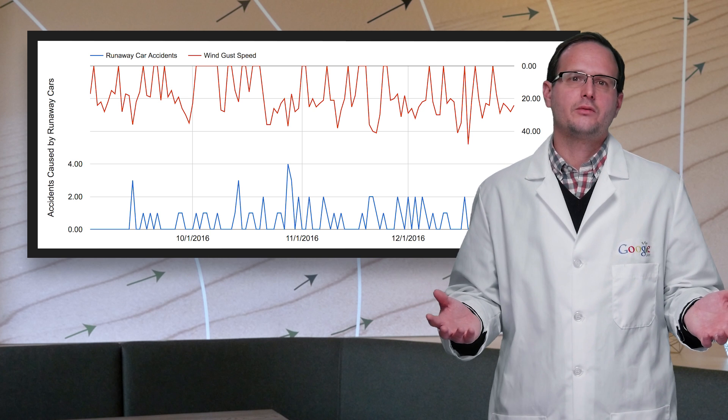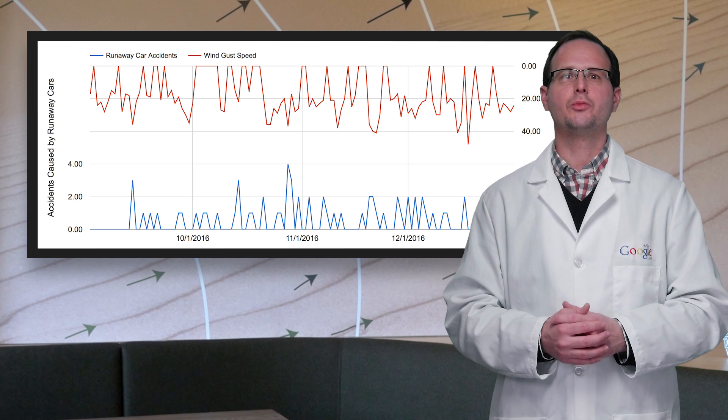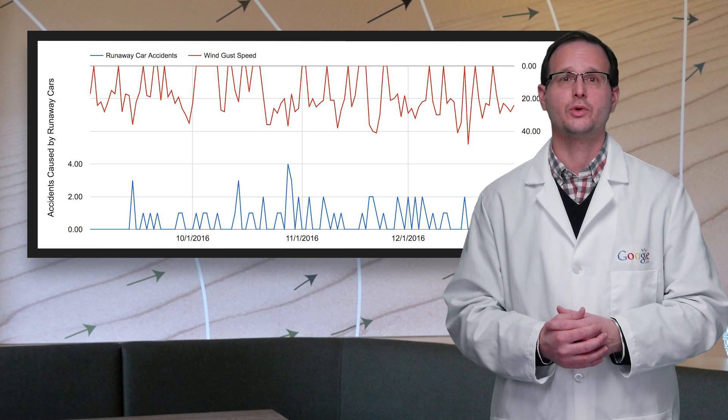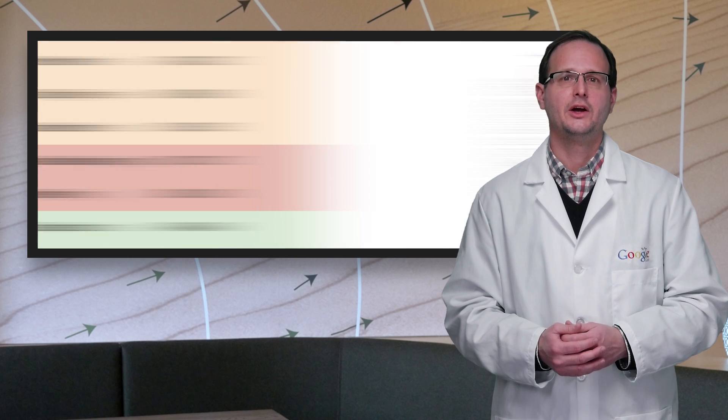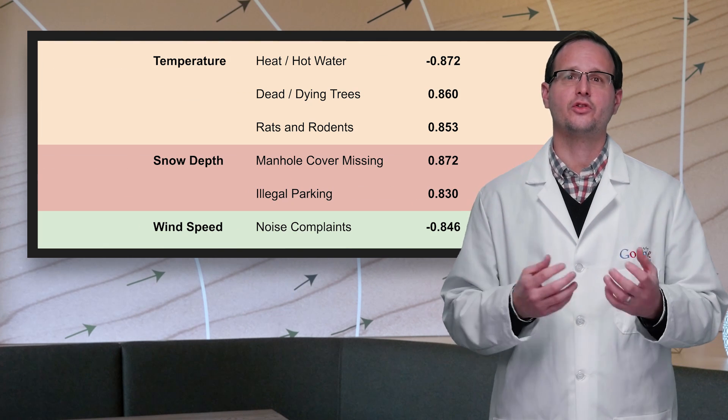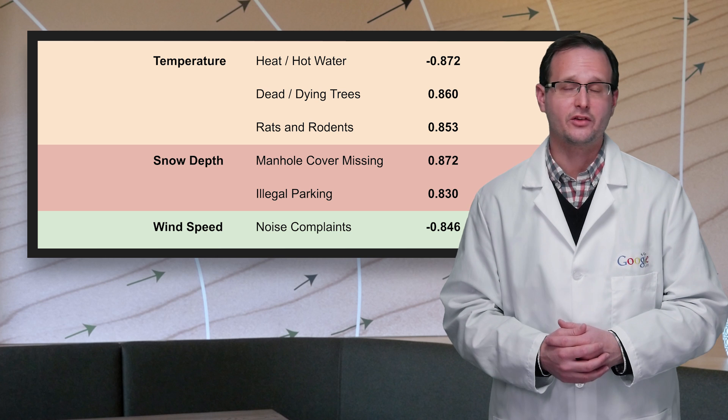So where to next? BigQuery includes every municipal complaint made to 311, so there's dozens of different complaint types that we can try and link to weather patterns. Using the core function, I ran queries to find the top correlations for temperature, snow depth, wind speed, wind gusts, and rain.